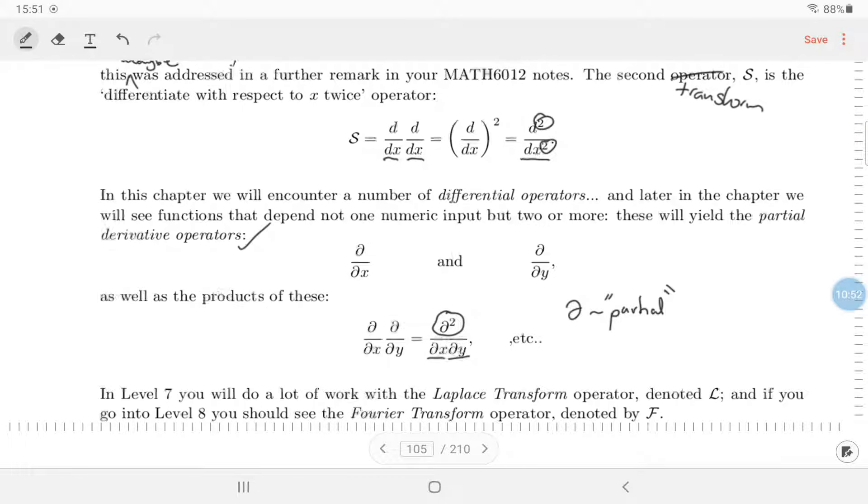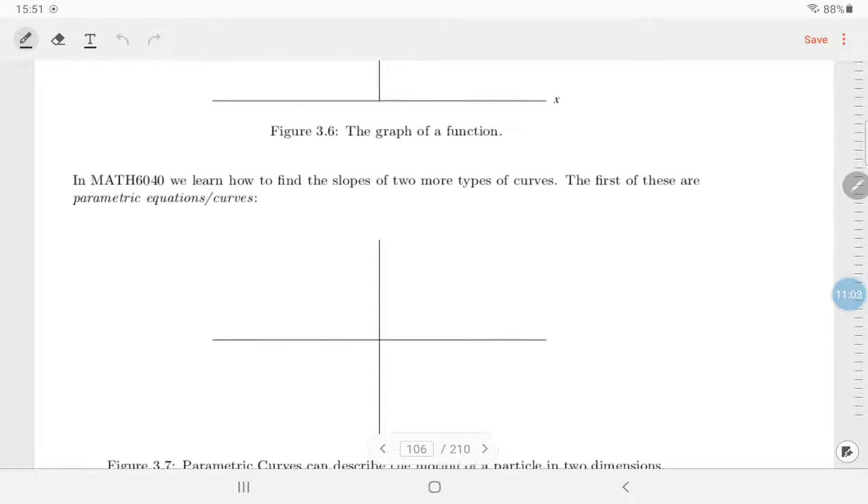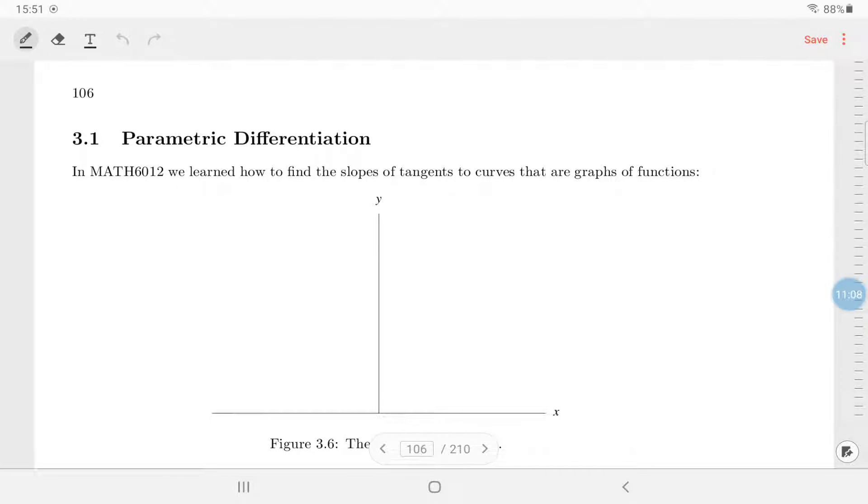If you're going to level seven you'll do a lot of work with what's called the Laplace transform, and if you're going to level eight you should see the Fourier transform. So this is a big kind of global way of looking at things. Right, so that's some language which may or may not help you in the course of this chapter.